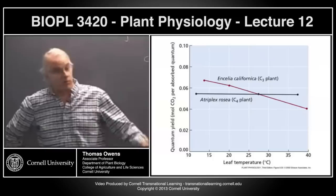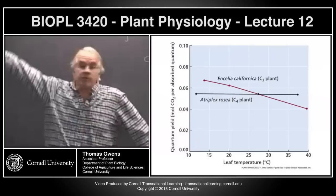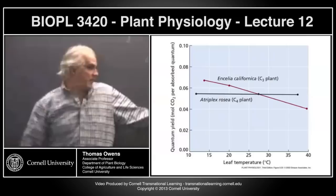Obviously there are other things involved too, particularly water and nitrogen availability, because C4 plants are more water-use efficient and more nitrogen-use efficient. But the primary mechanism determining the distribution of C4 and C3 plants is related to gas solubility as a function of temperature.